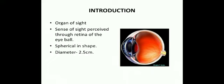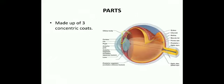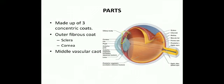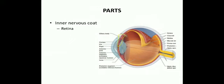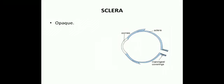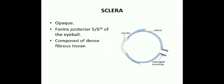The eyeball is spherical in shape and measures about 2.5 centimeters. It is made up of three concentric coats: the outer fibrous coat consisting of the sclera and cornea, the middle vascular coat consisting of the choroid, the ciliary body, and the iris, and the inner nervous coat consisting of the retina. The sclera is opaque and forms the posterior five-sixth of the eyeball.